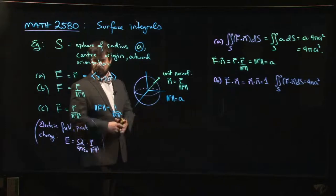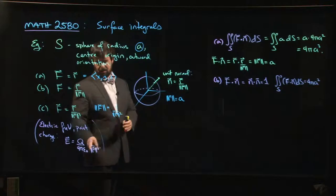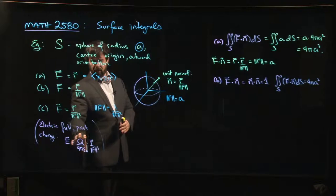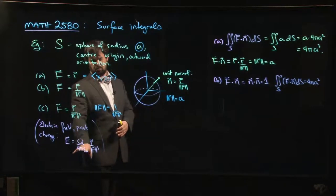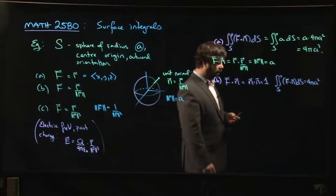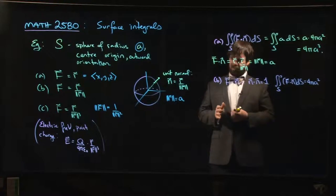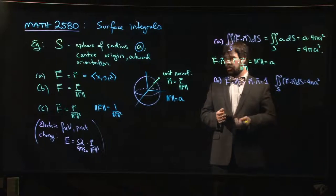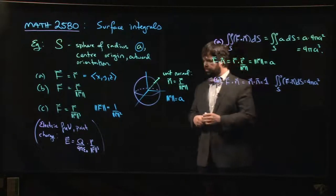This epsilon naught is a universal physical constant, the permittivity of free space, I think. So this is a constant out front times this vector field. If we know how to deal with this one, we just multiply by a constant. We'll come back to this and understand why this makes sense as the electric field for a point charge. We'll look at something called Gauss's law, which relates to this.